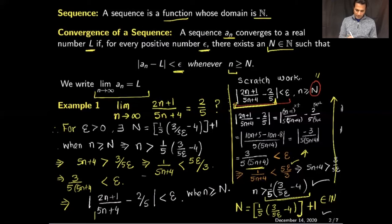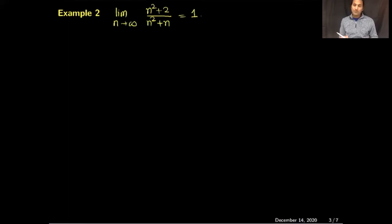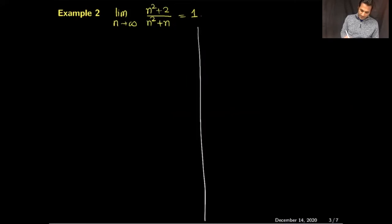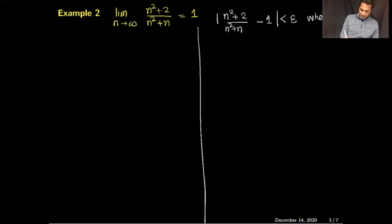Our second example: we will prove that the limit of the sequence (n²+2)/(n²+n) equals 1. I'll begin with scratch work. I want to show that |(n²+2)/(n²+n) − 1| < ε when little n is bigger than or equal to capital N, and my goal is to find capital N.